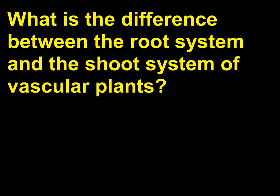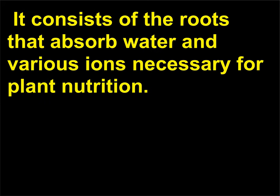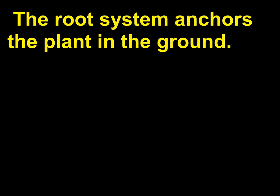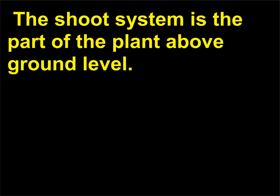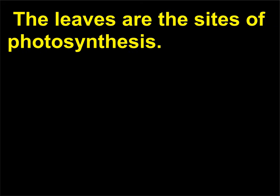What is the difference between the root system and the shoot system of vascular plants? The root system is the part of the plant below ground level; it consists of the roots that absorb water and various ions necessary for plant nutrition and also anchors the plant in the ground. The shoot system is the part of the plant above ground level and consists of the stem and leaves. The stem provides the framework for the positioning of the leaves, which are the sites of photosynthesis.